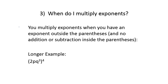Let's take a look at a slightly longer example. Suppose we have 2pq to the third, all to the fourth power. The 2 has an exponent of 1, p has an exponent of 1, and q has an exponent of 3. When there's more than one exponent inside the parentheses, we take the exponent outside and multiply it by every exponent inside. So the 4 multiplies the 1, the 1, and the 3: giving us 2 to the fourth, p to the fourth, and q to the twelfth.